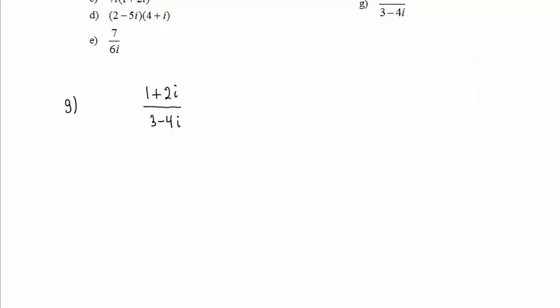In Part G, we are dividing by a complex number. The complex conjugate of the denominator is 3 plus 4i. We multiply that into the numerator and denominator. So in the numerator, we must foil those two expressions together.